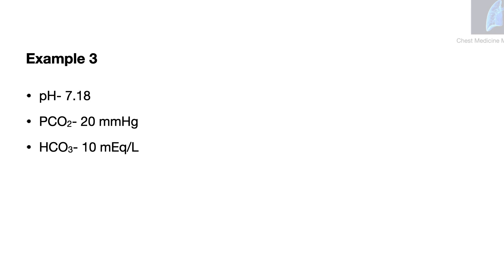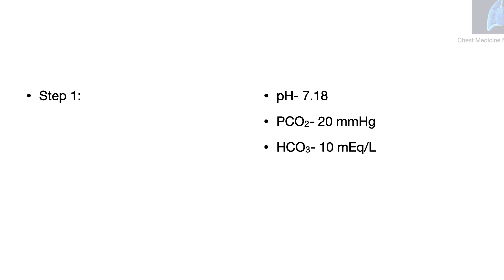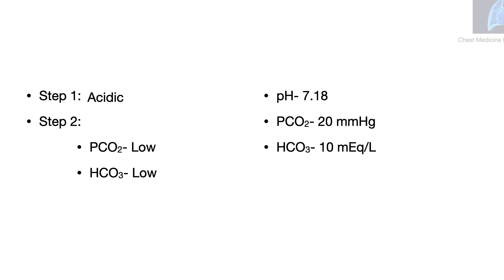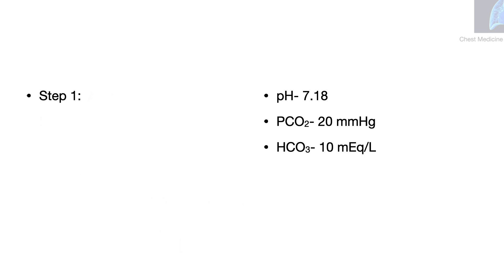Example 3: The pH is 7.18, the pCO2 is 20 mmHg, and the bicarbonate is 10 mEq per liter. Step 1: This is an acidic pH. Step 2: Both the pCO2 and the bicarbonate levels are low. A low pCO2 causes alkalosis, whereas a low bicarbonate causes acidosis. So the acidity here is caused by the low bicarbonate, and therefore this is a metabolic acidosis.